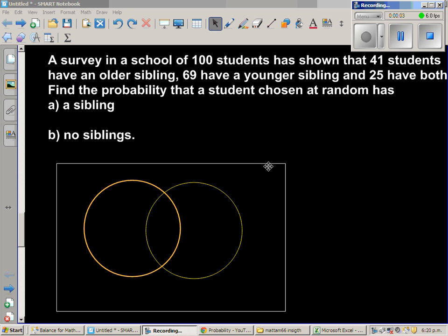Let us look at this question where we are going to use a Venn diagram. A survey in a school of 100 students has shown that 41 students have an older sibling, 69 have a younger sibling, and 25 have both. Find the probability that a student chosen at random has a sibling and no siblings.